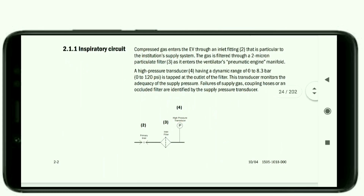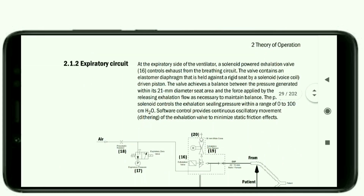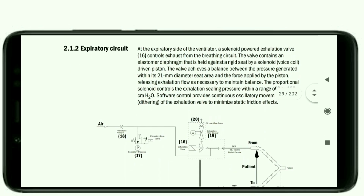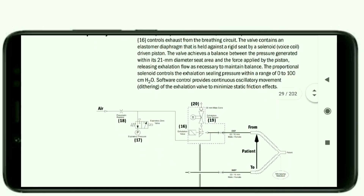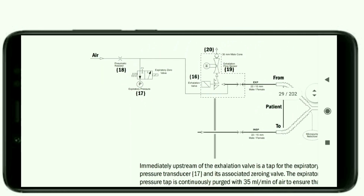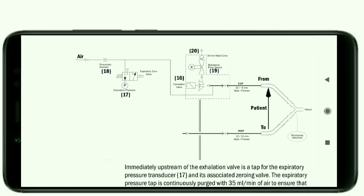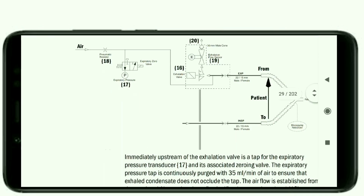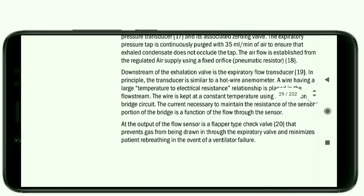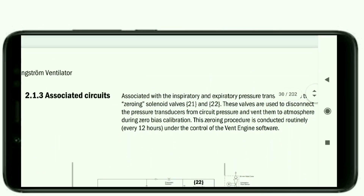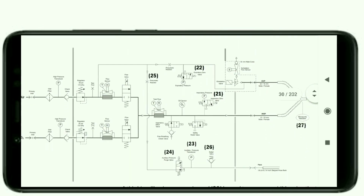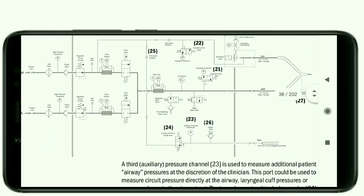Now let's see the pneumatic operation. The block diagram shows the entry of compressed gas, the inspiratory circuitry, and the expiratory circuitry. This is the complete pneumatic block diagram.